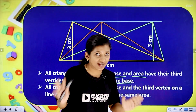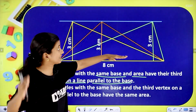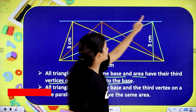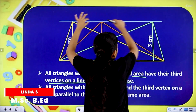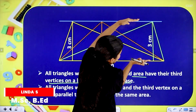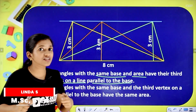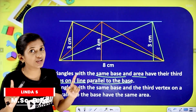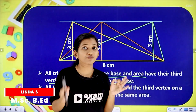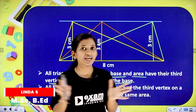Triangles with the same base — that's why the third vertex line is the same as the line parallel to the base. This statement is very important: all triangles with the same base and third vertex on a line parallel to the base have the same area.